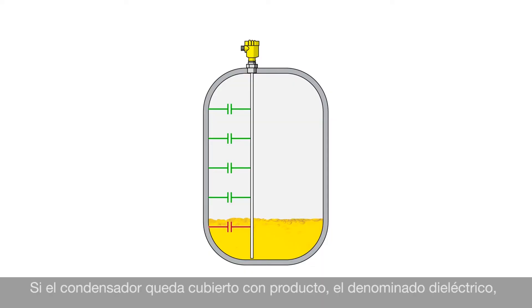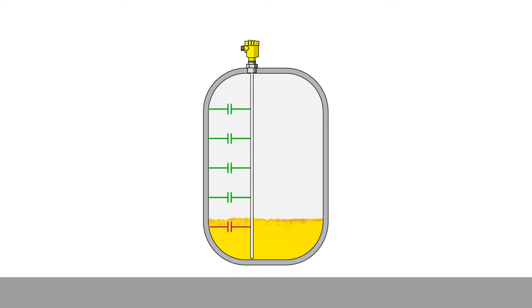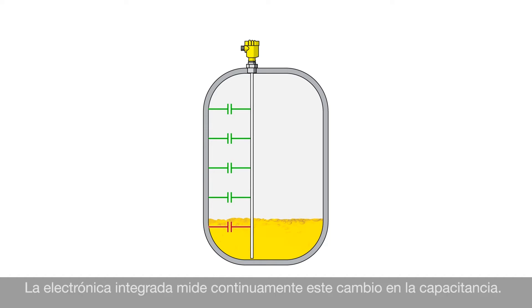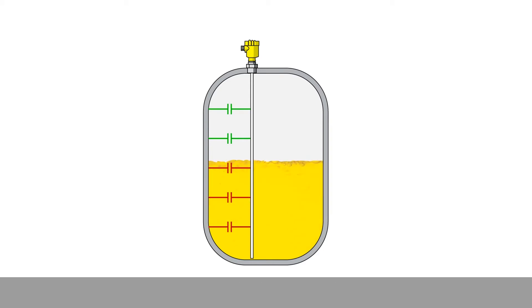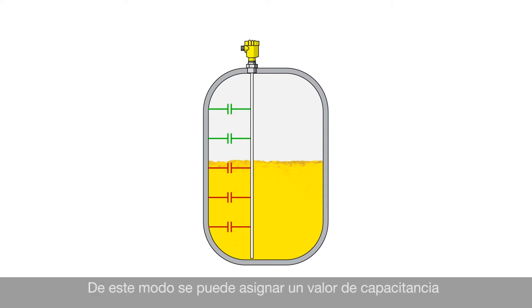When the capacitor is filled with a medium — the so-called dielectric — the capacitance is changing. This capacitance change is continuously measured by the integrated electronics. The larger the capacitance, the higher the level and vice versa. And so the capacitance value can be assigned to the corresponding level.